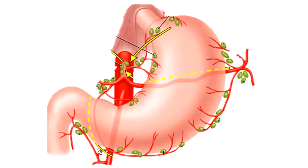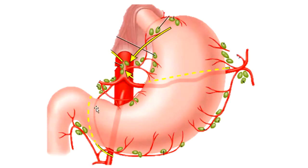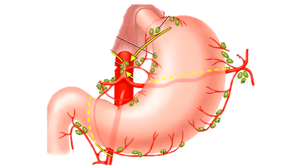The right gastroepiploic artery area drains into the subpyloric group of nodes. The left gastroepiploic and short gastric artery areas drain into the pancreaticosplenic group of nodes. The left gastric artery area, zone one, drains into the superior gastric group of nodes, and zone four drains into the suprapyloric nodes. These are the lymphatic groups you should remember, as the lymphatic drainage of the stomach is a very commonly asked exam question.